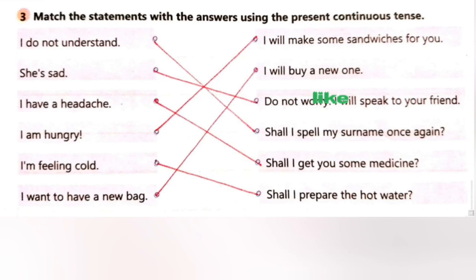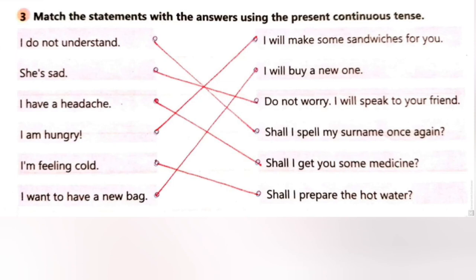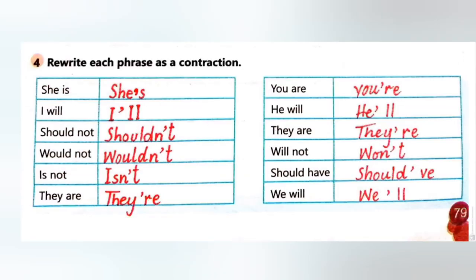Activity 3 — match the statements with the answers using the present continuous tense. 'I do not understand' — matched with 'Shall I spell my surname once again?' 'She is sad' — matched with 'Don't worry, I will speak to your friend.' 'I have a headache' — matched with 'Shall I get you some medicine?' 'I am hungry' — matched with 'I will make some sandwiches for you.' 'I am feeling cold' — matched with 'Shall I prepare the hot water?' 'I want to have a new bag' — matched with 'I will buy a new one.'